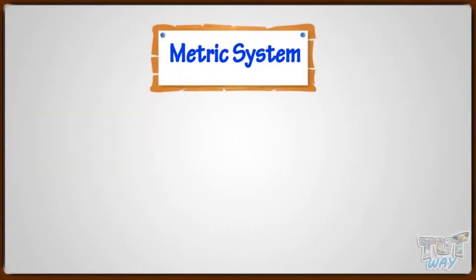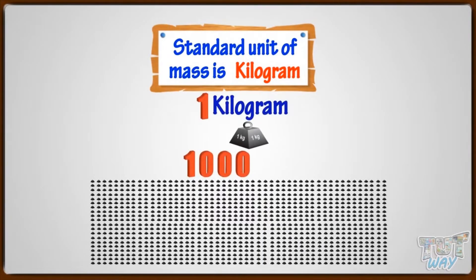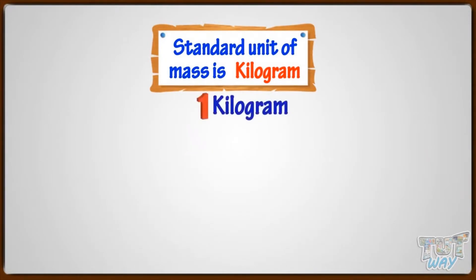In metric system, the standard unit of mass is kilogram. A kilogram is divided into 1000 equal parts called grams. One kilogram is written as kg and one gram is written as g.